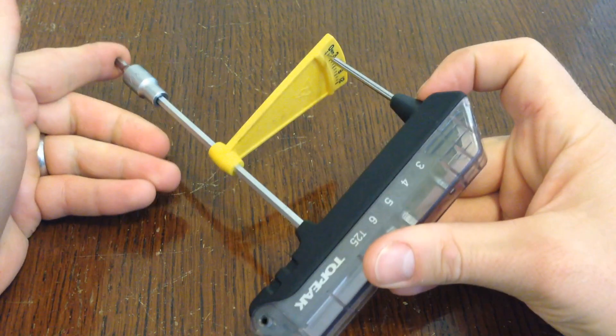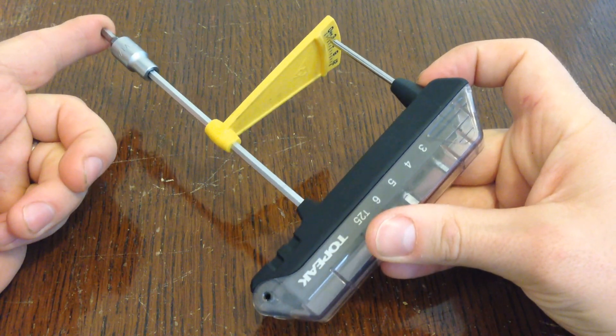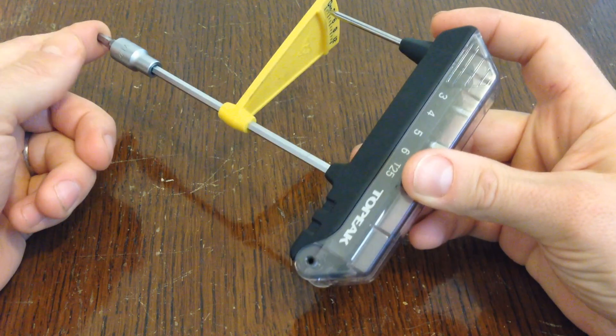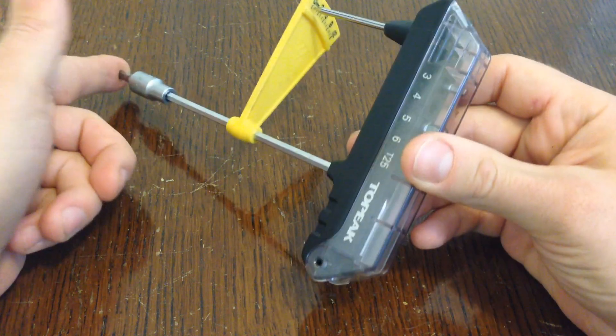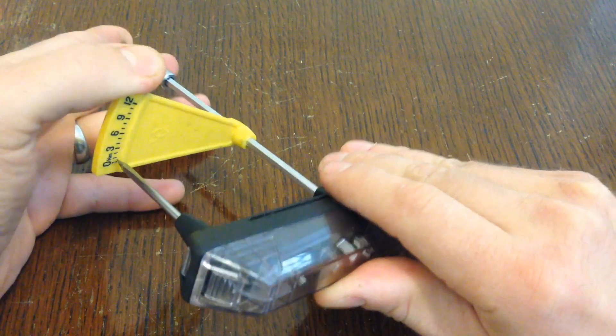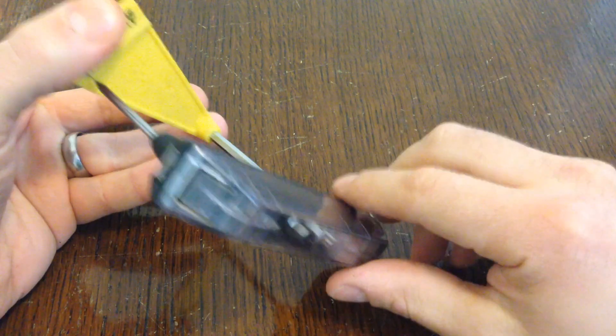It is only designed for torquing up your bolts. It's not something you want to be undoing your bolts with on your bike because undoing will actually uncalibrate it. So it comes calibrated from the factory and it's only designed for torquing up bolts.